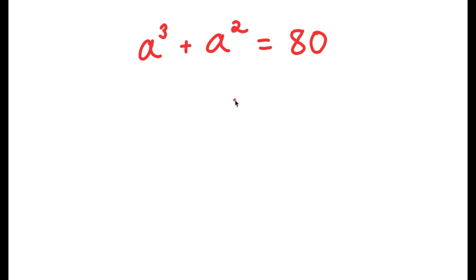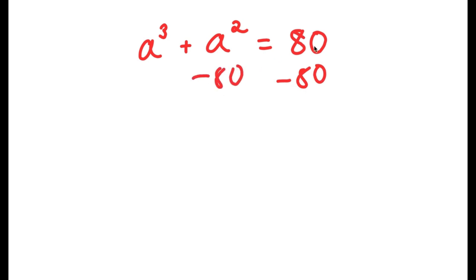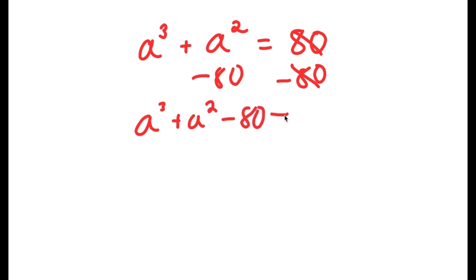On this problem, I have a to the power of 3 plus a squared is equal to 80. To solve this, I'm going to first start by subtracting 80 on both sides, so I get a to the power of 3 plus a squared minus 80 is equal to 0.